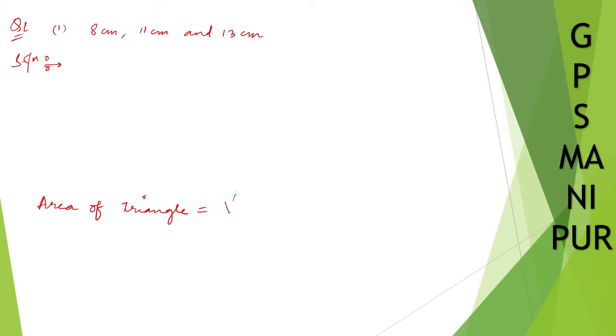Area of triangle is equal to root over S into S minus A, S minus B and S minus C. This is the thing which you need to remember. The formula area of the triangle is equal to this formula.